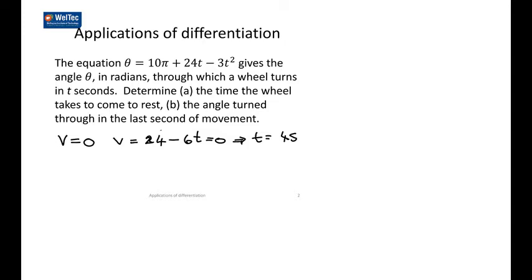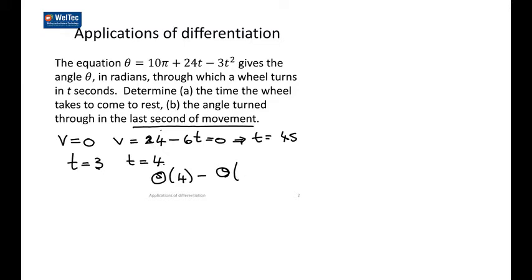The second part of the question says find the angle turned in the last second. The last second is the time the wheel is moving between t equals 3 and t equals 4 seconds, because it stops at 4 seconds. We need to find theta when t is 4, and subtract theta when t is 3. It's just a calculator problem at that stage — put 4 into the original, put 3 into the original, and subtract. The answer is 3. Don't forget you will need a unit.